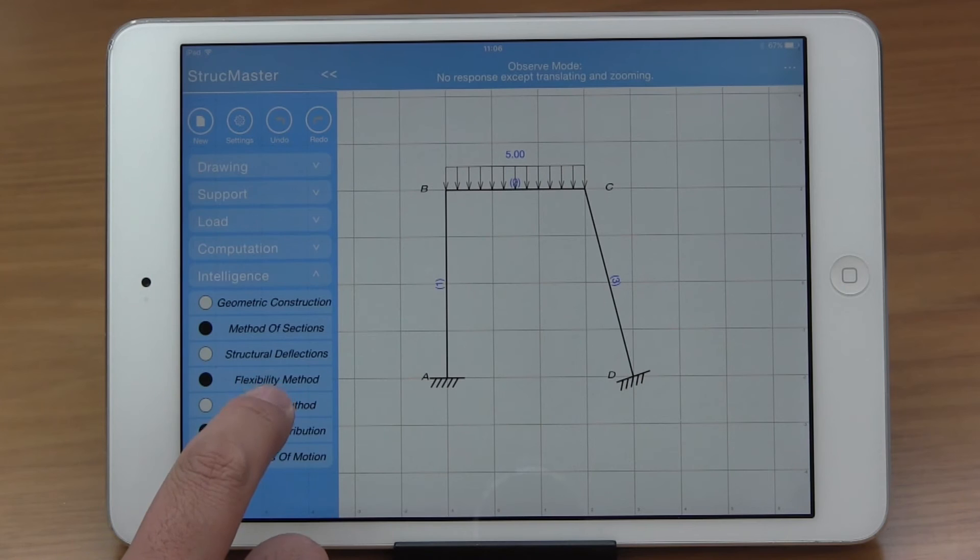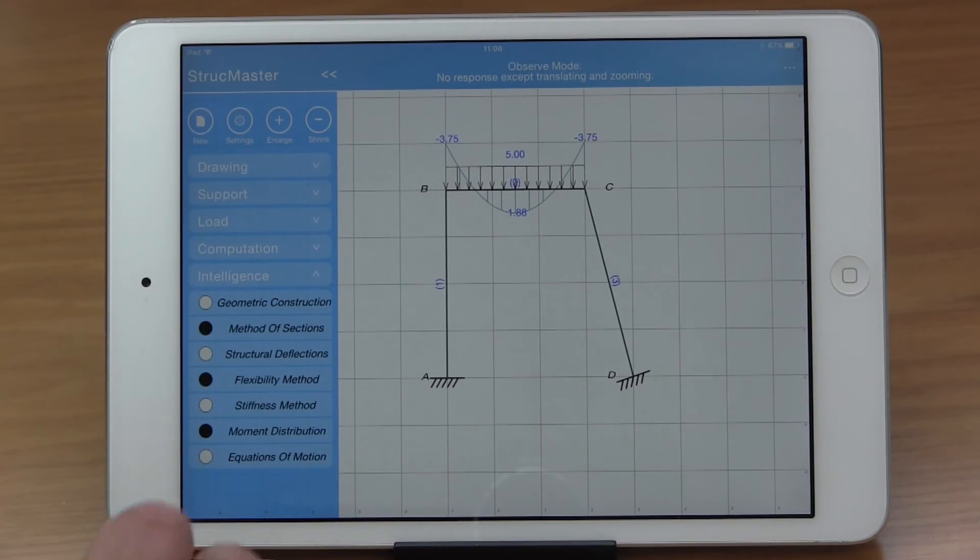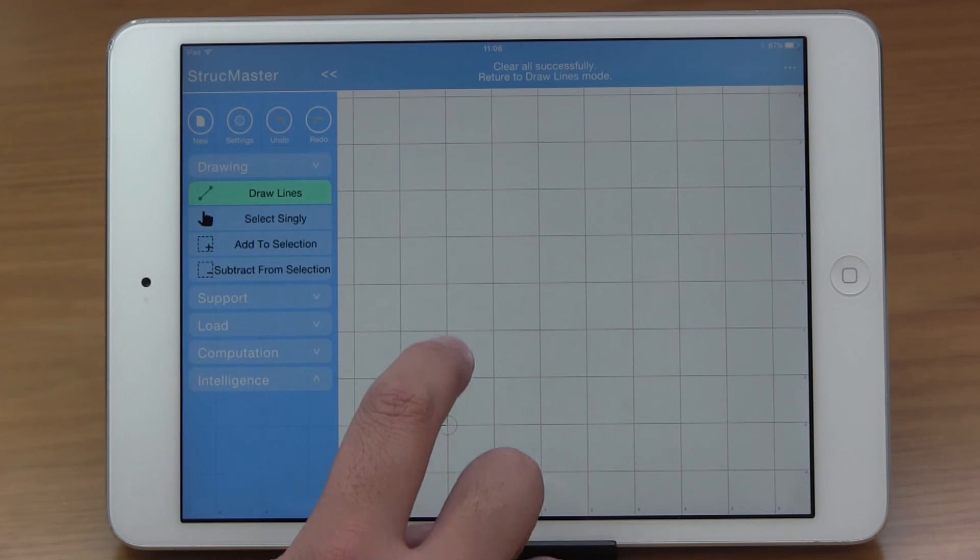The most exciting feature is that the Creative Intelligence algorithm can provide you with all the manual calculation steps, just like in your structural mechanics textbook. You should pay attention to one important issue.